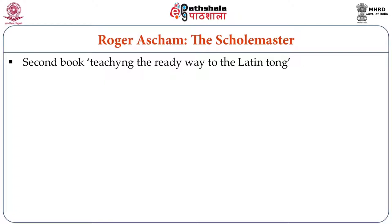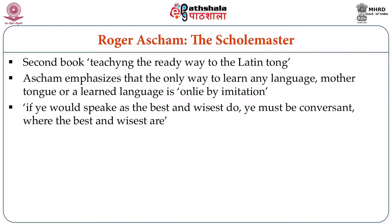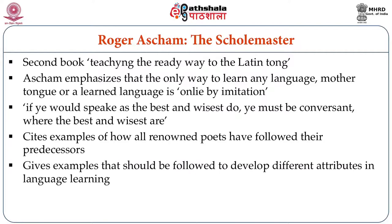His second book, Teaching the Ready Way to the Latin Tongue, emphasizes that the only way to learn any language, whether it is a mother tongue or a learned language, is only through imitation. He says that if anyone wants to speak as the best and the wisest do, then that person must be conversant with the best and the wisest. In his book, he cites examples of how all renowned poets have followed their predecessors — those who are the best and the wisest — and he gives examples that need to be followed to develop different attributes in language learning.